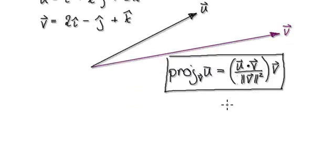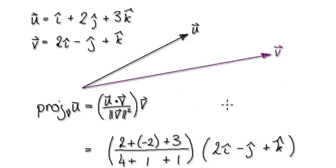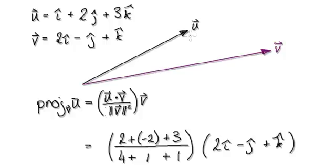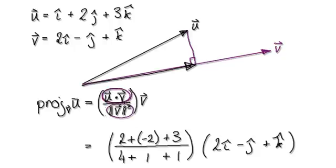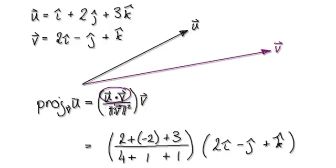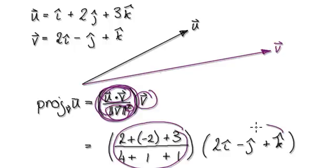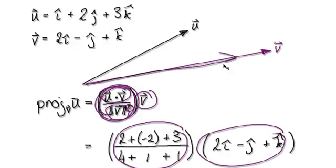Blindly follow the formula. The formula is saying: if you project U onto V, this vector here is given by this. Perform your dot product divided by the magnitude of V squared. This whole thing here will give you a number, because dot product will give you a number, magnitude will give you a number, and when you square it, it gives you a number. Then multiply by the vector V.